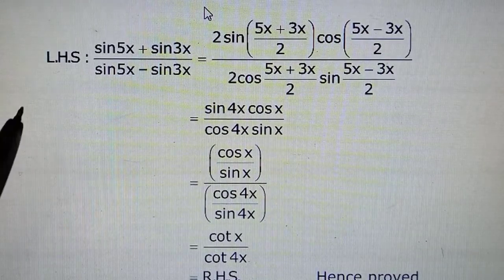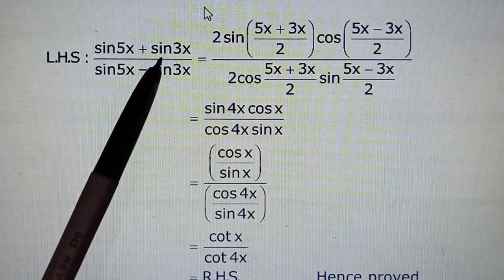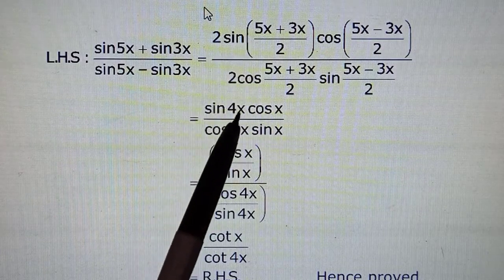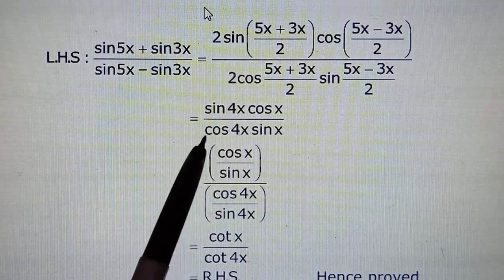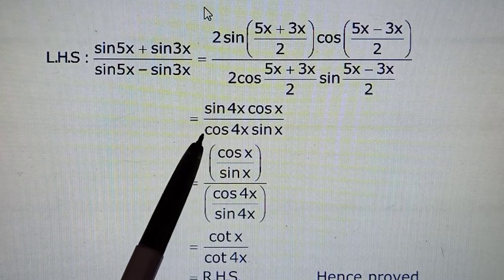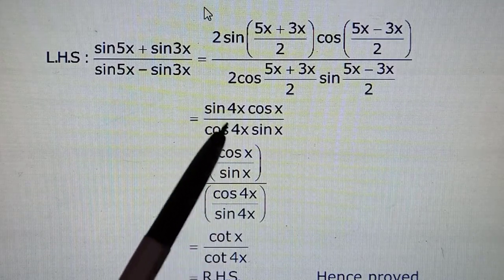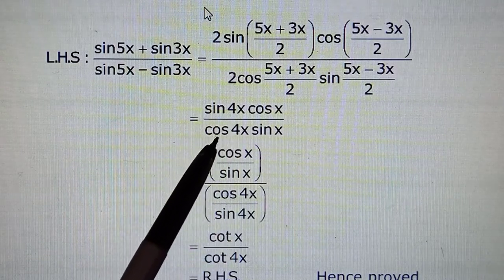The same way what we were doing till now. Simply sin C + sin D and sin C - sin D formulas. And if you apply that, what you are observing is that sin upon cos which is coming as tan.